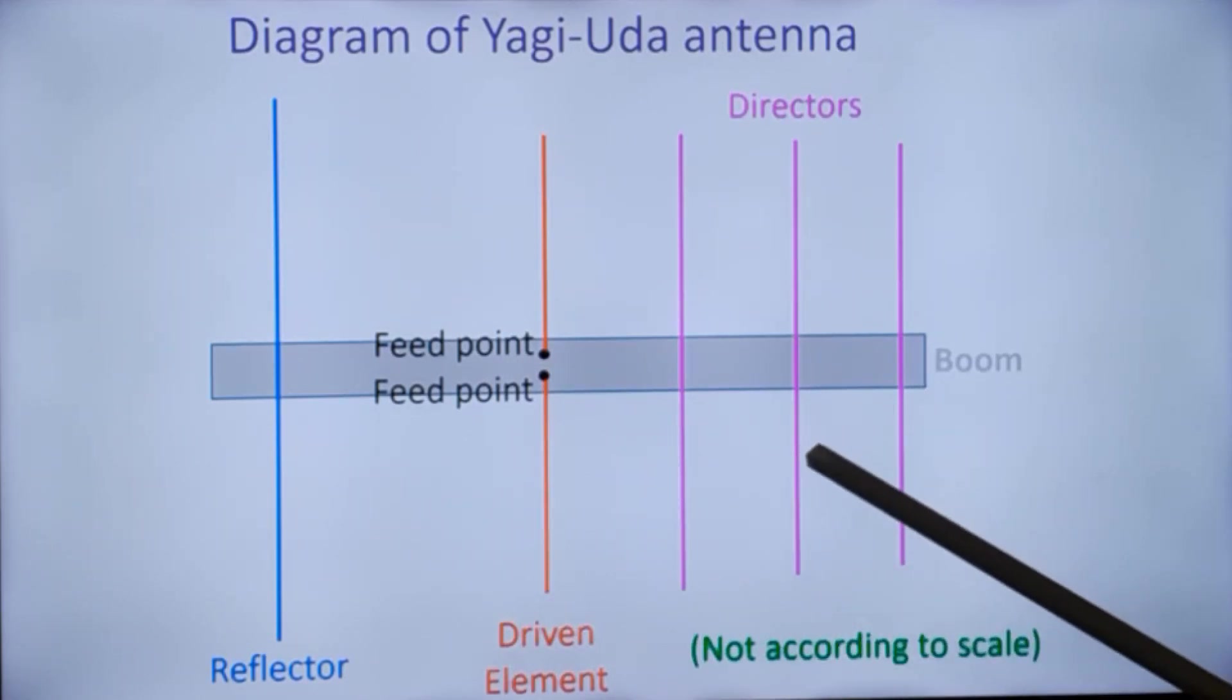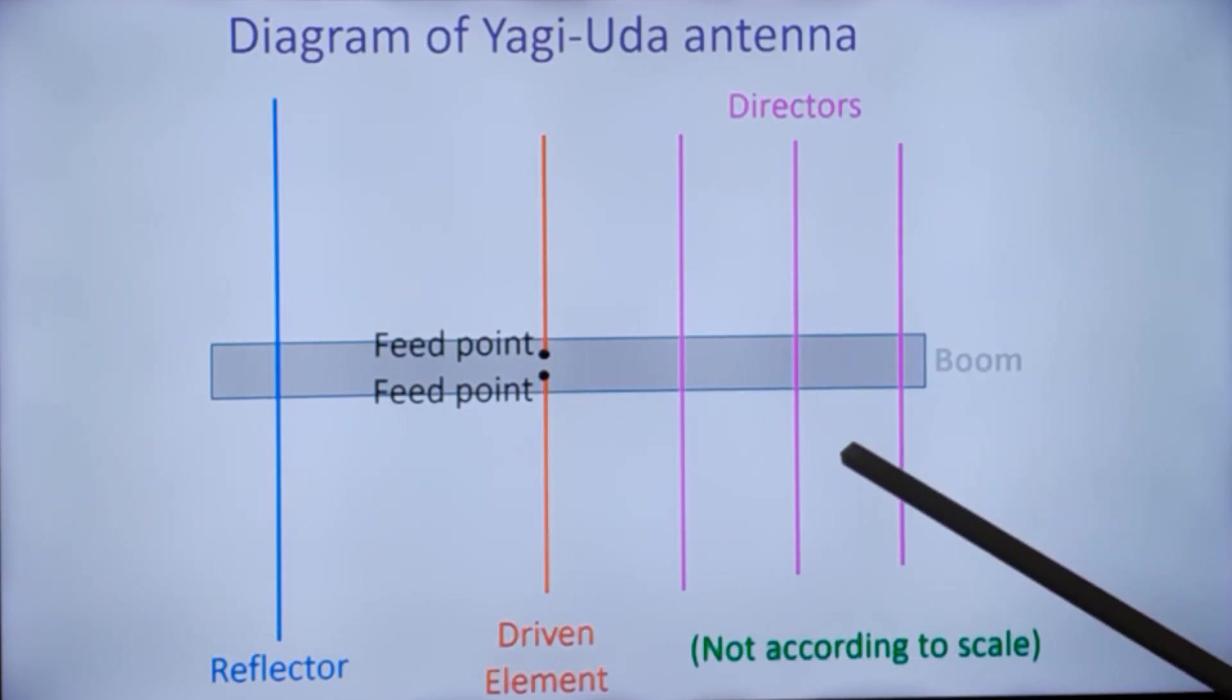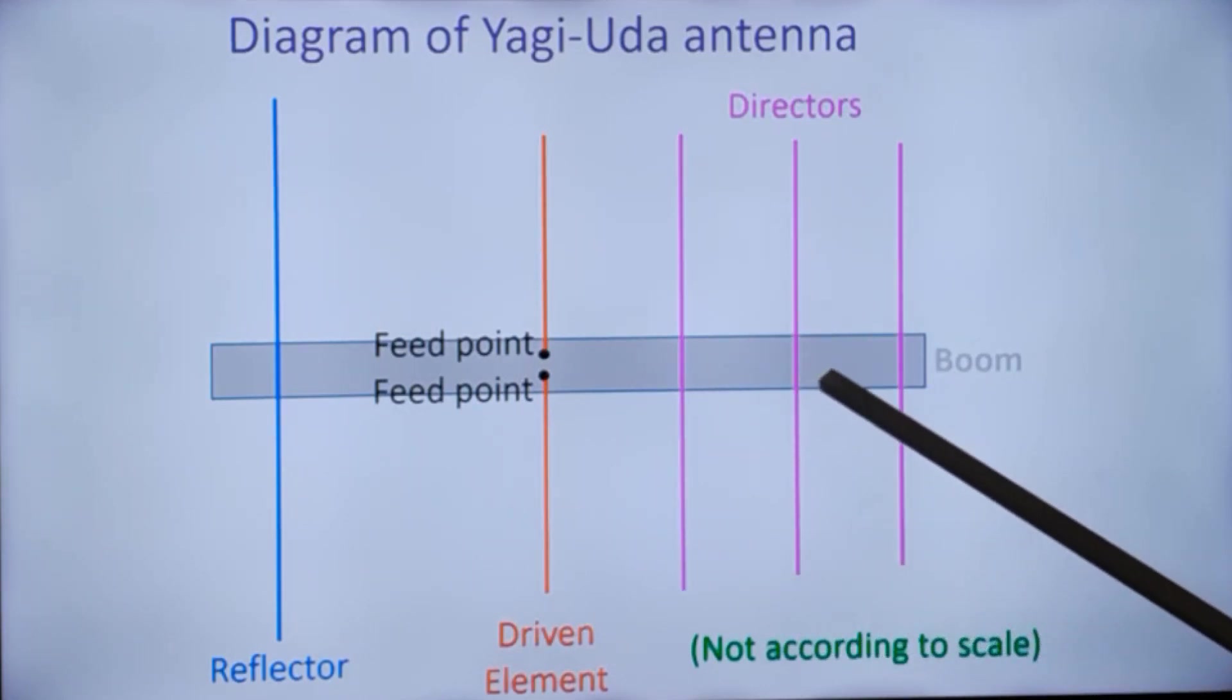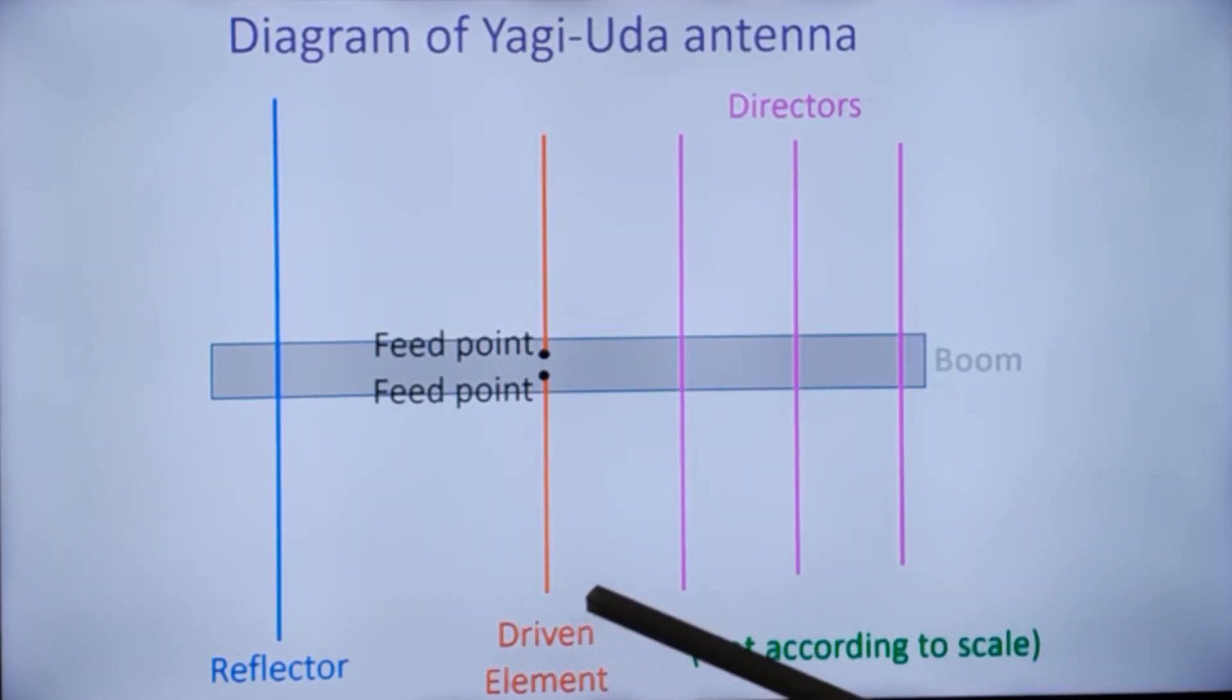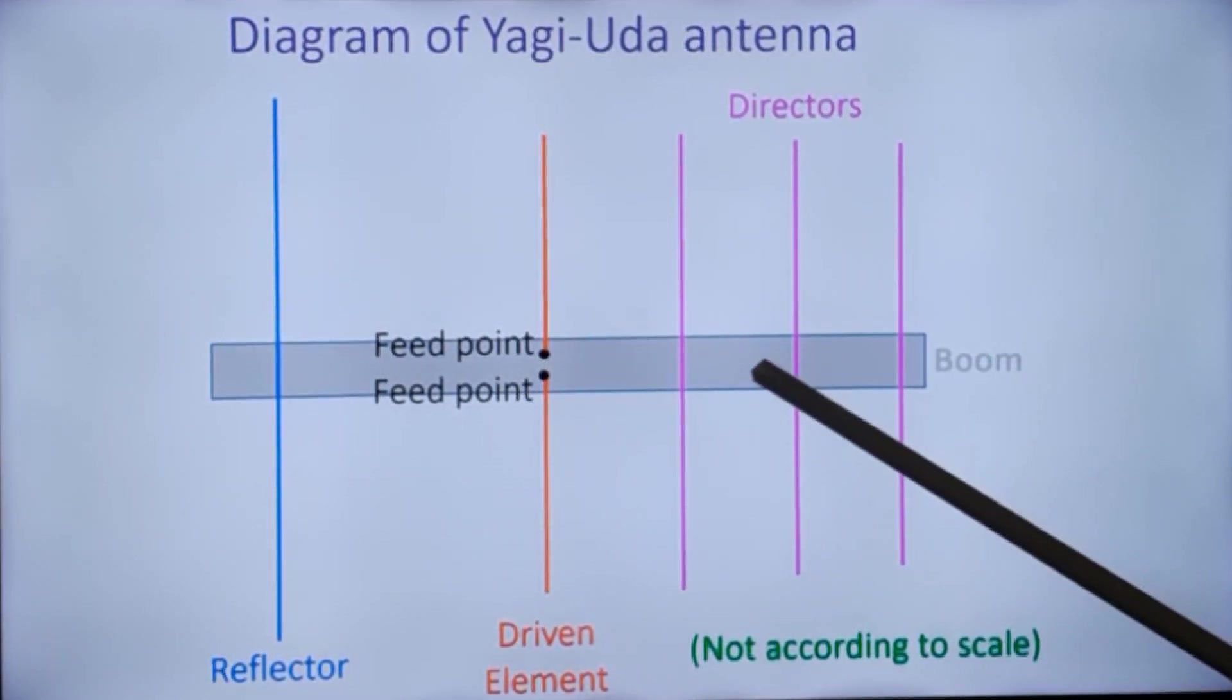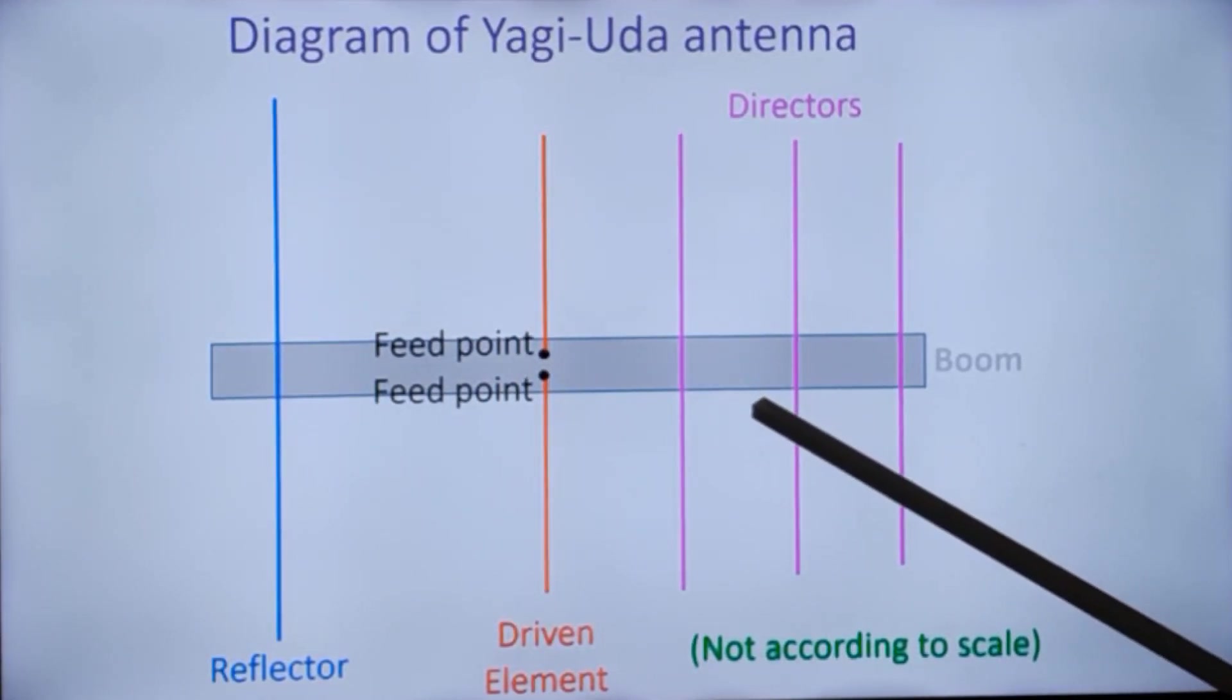Sometimes in certain designs they are connected by drilling in the center of the boom and you just connect it with a screw because the RF voltage in the center will be zero. There is no harm in connecting to the boom, but there will be difference in the length of the elements depending on whether the elements are isolated from the boom using a hydraulic clamp in case of VHF and UHF antenna or some other method.